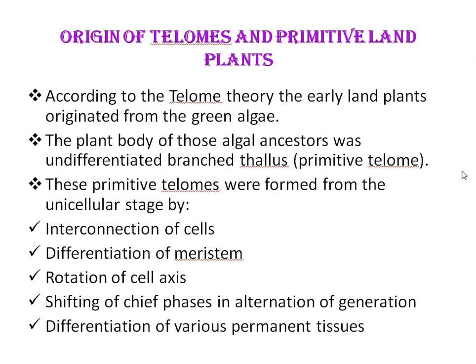According to the telome theory, the early land plants originated from green algae which lived in the tidal zone of the Cambrian and Silurian sea coasts. The plant body of these algal ancestors was an undifferentiated, branched thallus — the primitive telome. According to Zimmerman, these primitive telomes were formed from the unicellular stage by five different elementary processes.